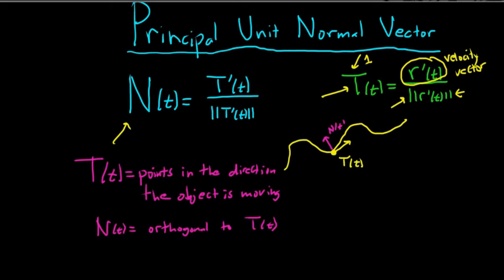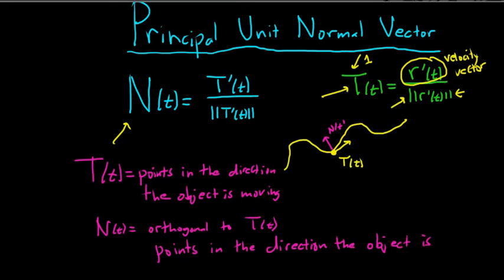N(t) points in the direction the object is turning — it always points towards the concave side. So if this is your tangent vector here, your normal vector would be pointing that way. If this is your tangent vector here, your N is down here. And if this is your tangent vector over here, your N is up here. That's the relationship between the unit normal vector and the unit tangent vector.